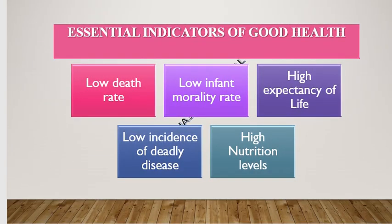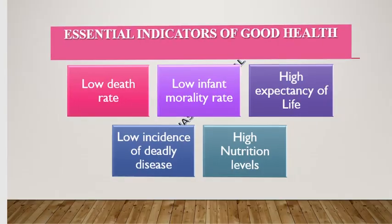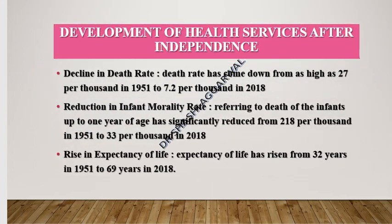What are the indicators of good health? These include: low death rate, low infant mortality rate, high life expectancy, low incidence of deadly disease, and high nutrition levels. After independence, these indicators have improved — for example, the death rate has declined significantly.